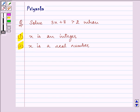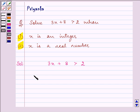So let us start with our solution. The inequality given to us is 3x plus 8 is greater than 2. Now we need to find the value of x so let us start by simplifying.